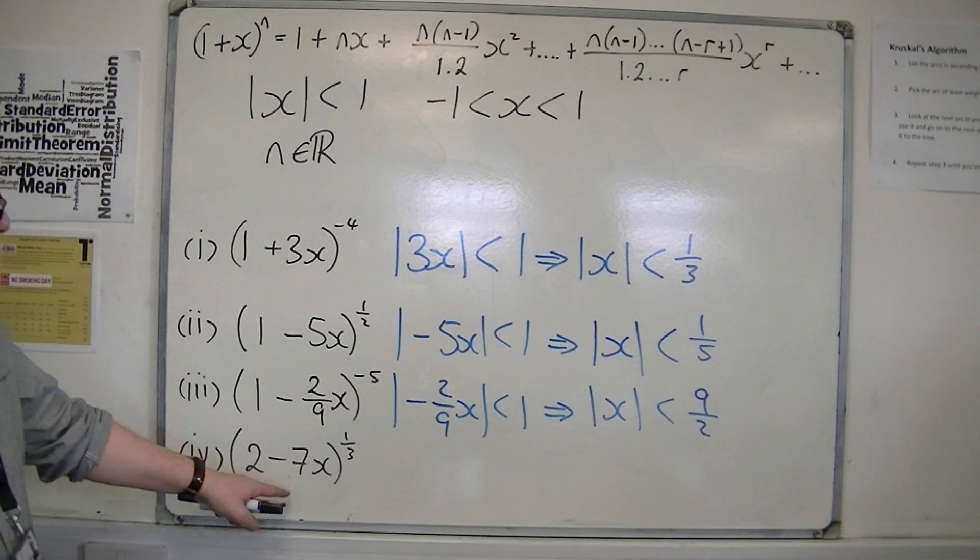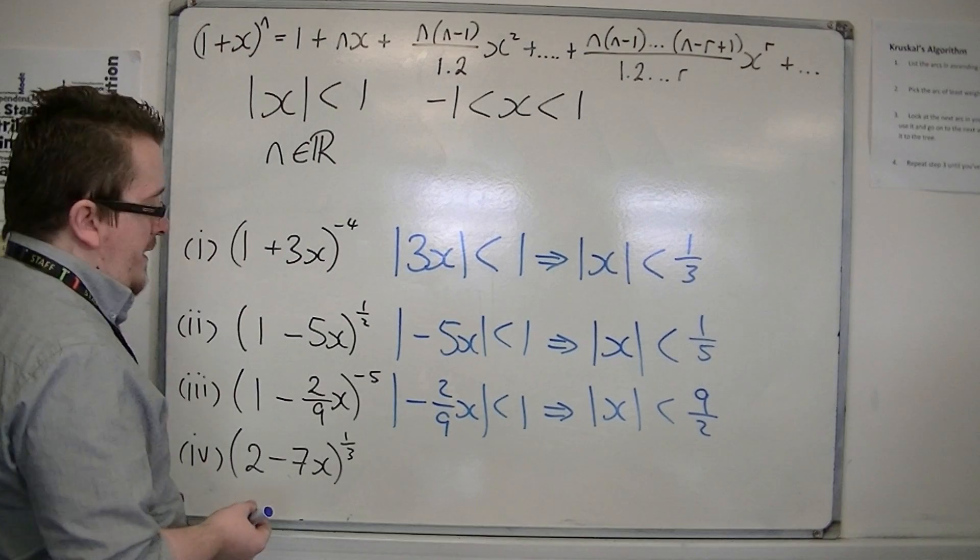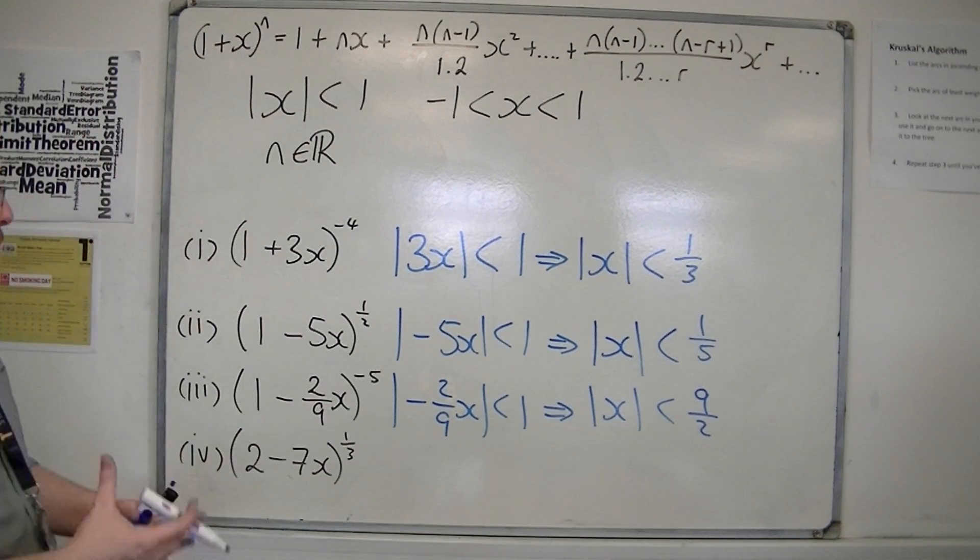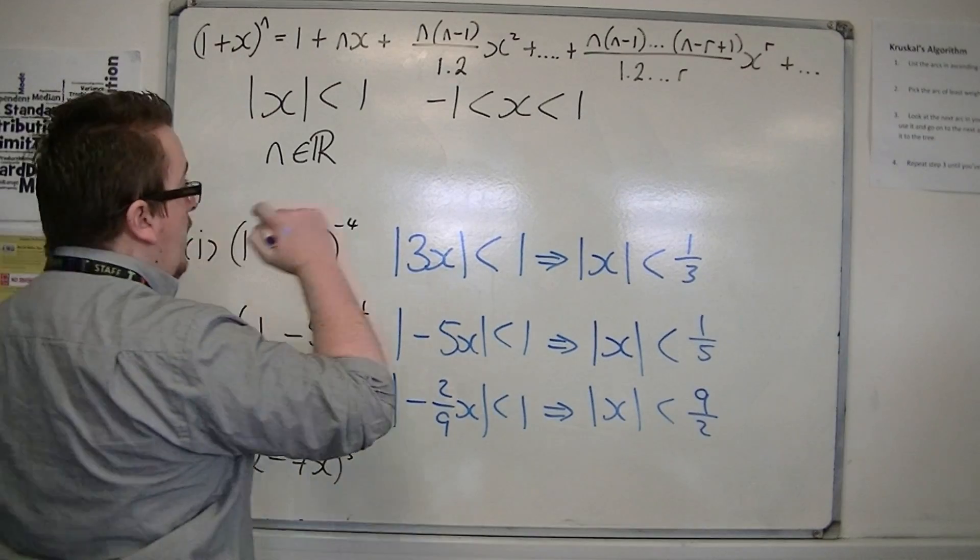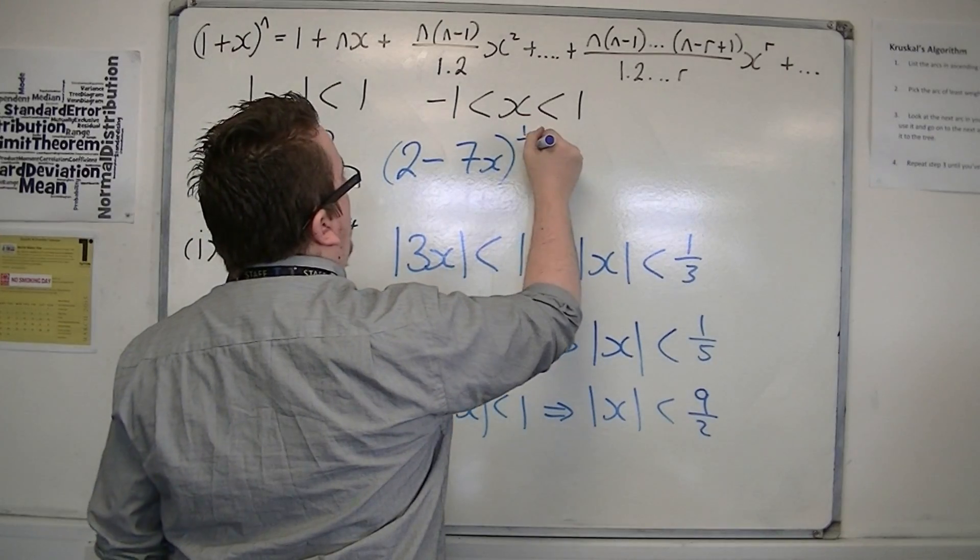Then, I've got this final example down here. There's 2 minus 7x to the power of 1 third. Now, I don't just replace the mod x with minus 7x. I've first of all got to factorise what is inside that bracket.